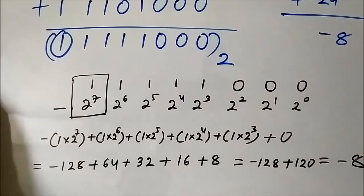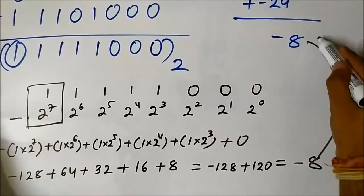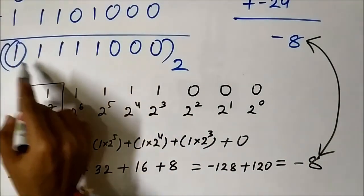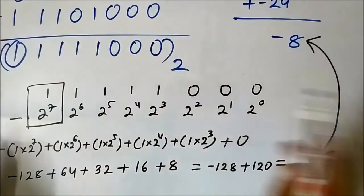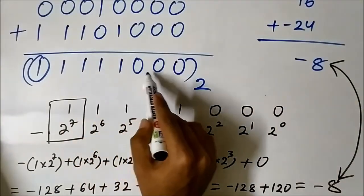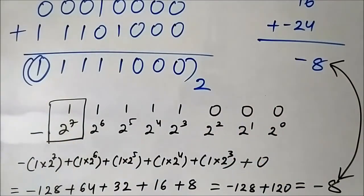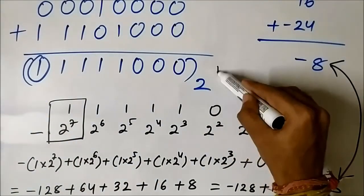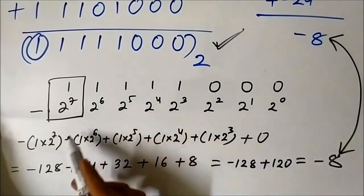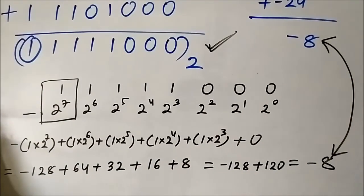This is equal to minus 8 — the same as our expected result. These two results are the same. So our answer 1 1 1 1 1 0 0 0 in 2s complement signed expression is correct. We just confirmed it by converting it into decimal form.